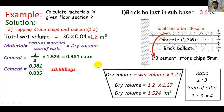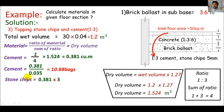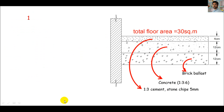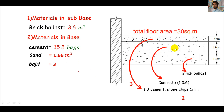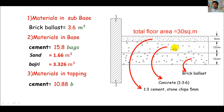Converting cement to bags by dividing by 0.035, which is the volume of one cement bag, you get 10.88 bags. For stone chips: looking at the ratio, stone chips is three times the cement. We already calculated cement as 0.381 cubic meters, so multiplying by 3 gives the stone chips volume. That was our last approach. Now let me list all the materials together — first approach: brick base; second approach concrete: cement, fine aggregate, coarse aggregate; topping: cement and stone chips.